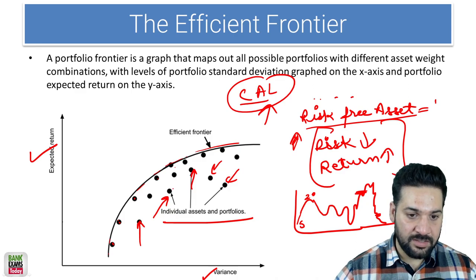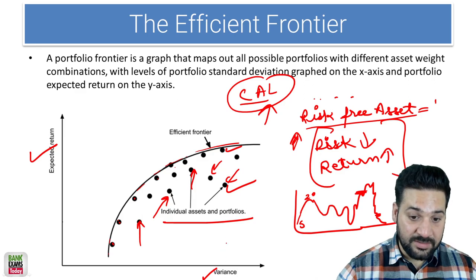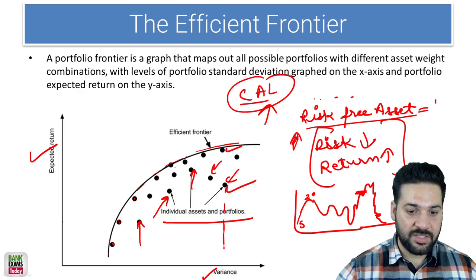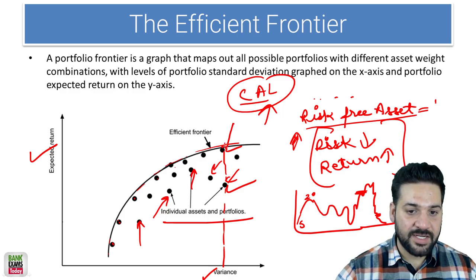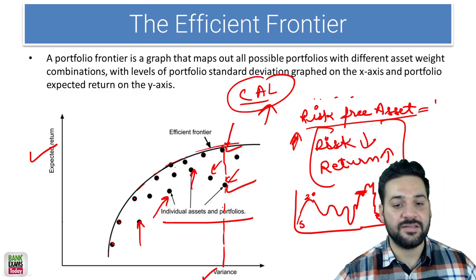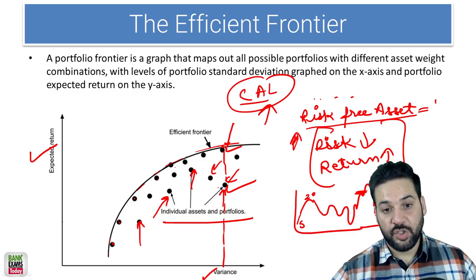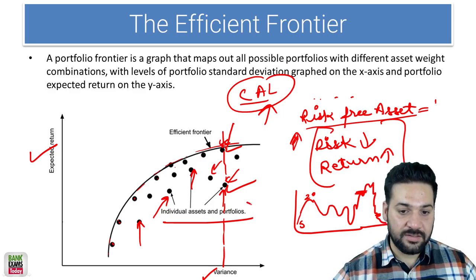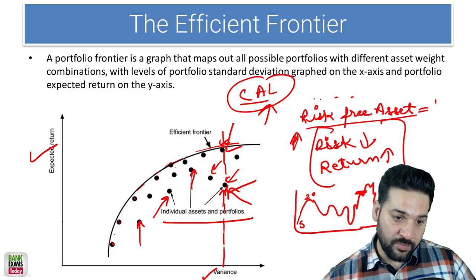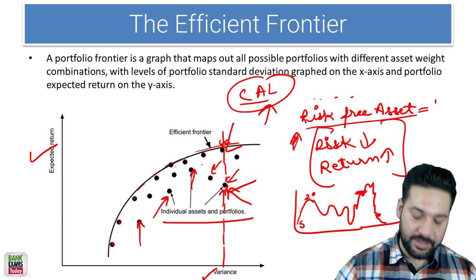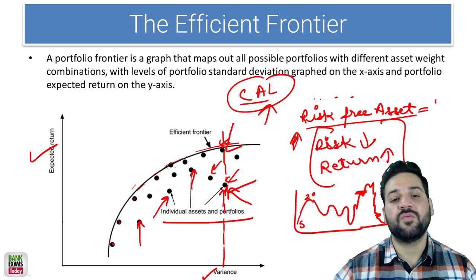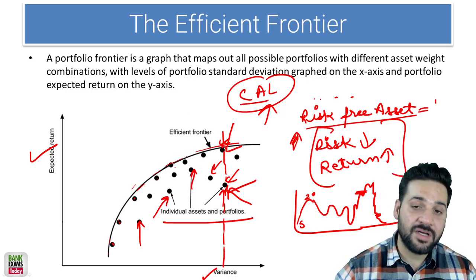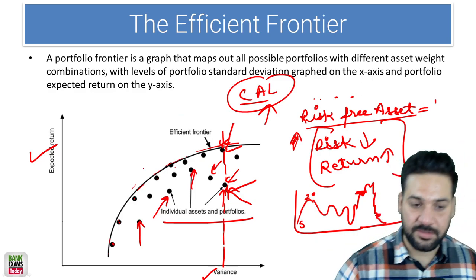See this: let's say this one and this one. The risk taken is almost the same, but the return at exactly this point is higher than this point. So this one is more efficient than this one. So we draw this line — this is the efficient frontier. At this frontier, whatever the returns are, they are the most efficient portfolios or assets.